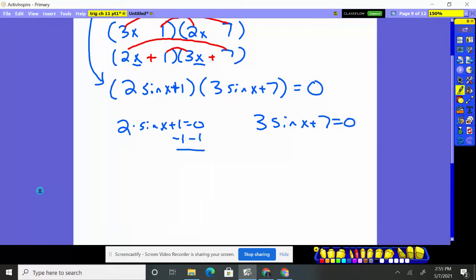Solving this, I subtract 1. 2 times the sine of x has to come out to be negative 1. We now divide by 2. We're looking for where's the sine of x negative 1 half.